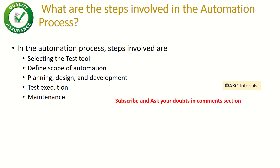The next question is: what are the steps involved in the automation process? The steps are: first, select a testing or automation tool; then define the scope of your automation — what you're trying to accomplish. Next, plan, design, and develop the automated test scripts. Then use a build pipeline to execute all automated test scripts. Finally, consider the effort required in maintaining the automated scripts — that's very important.